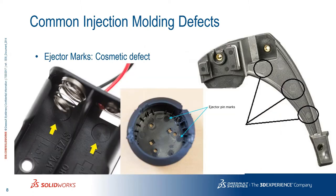Ejector marks are another common injection molding defect. When you have many ejectors or are trying to eject your part with high force from the ejector plate, you will find ejector pin marks. Shrinkage is often the main reason — the part sticks inside the mold and cannot be ejected easily, so you apply a high amount of force to eject it, which leaves marks at the ejector locations.